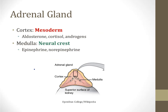Finally, the adrenal gland also has strange embryology. The adrenal gland consists of a cortex, which comes from the mesoderm. The cortex is the outer portion and makes the hormones aldosterone, cortisol, and androgens. The medulla of the adrenal gland can be thought of as like a big nerve — it derives from the neural crest and secretes hormones that also serve as neurotransmitters, such as epinephrine and norepinephrine. That concludes our video on the germ layers.